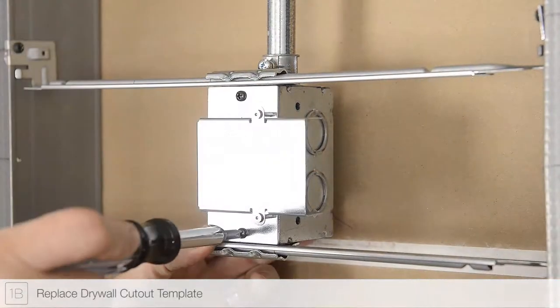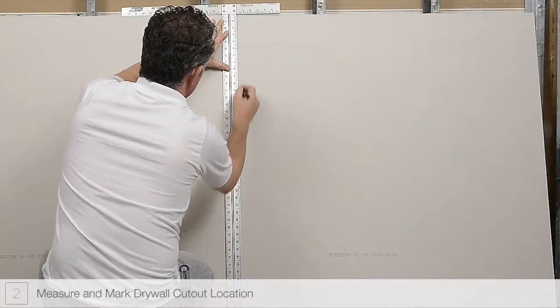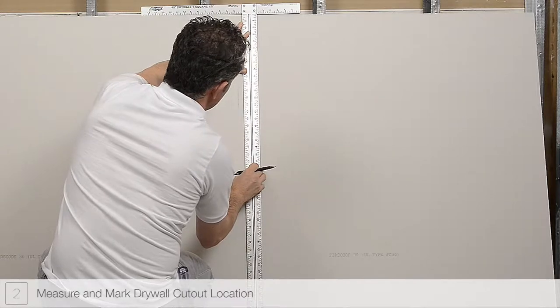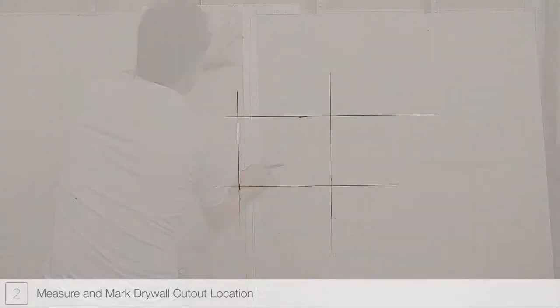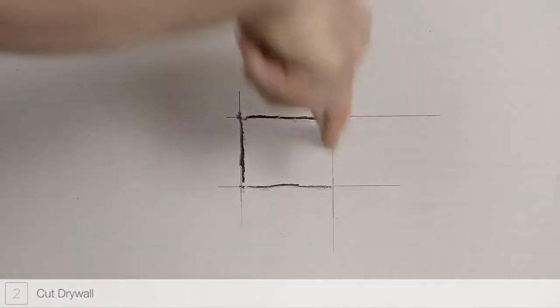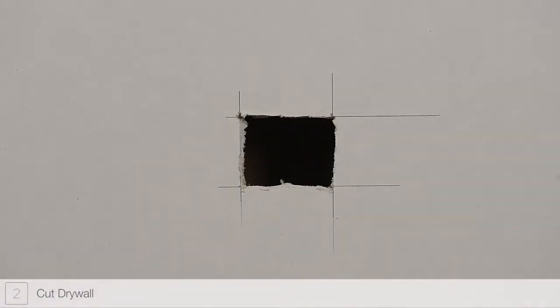Replace the drywall cutout template. Step 2B: Locate and mark the position of the power feed junction box. Cut the drywall using a jab saw or other appropriate tool to expose the junction box.